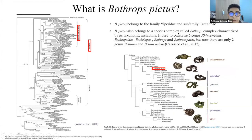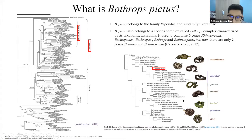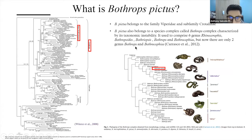Bothrops pictus belongs to the family Viperidae, subfamily Crotalinae. It also belongs to the species complex called the Bothrops complex, which is characterized by its taxonomic instability. It used to comprise six genera, including Rhinocerophis, Bothropoides, Bothrops, and Bothrocophias, but now there are only two genera: Bothrops and Bothrocophias. The Bothrops complex sensu stricto consists of the neuwiedi group and the atrox group. Recently, Bothropoides, Rhinocerophis were synonymized with Bothrops, so now the Bothrops complex consists of just Bothrops and Bothrocophias.